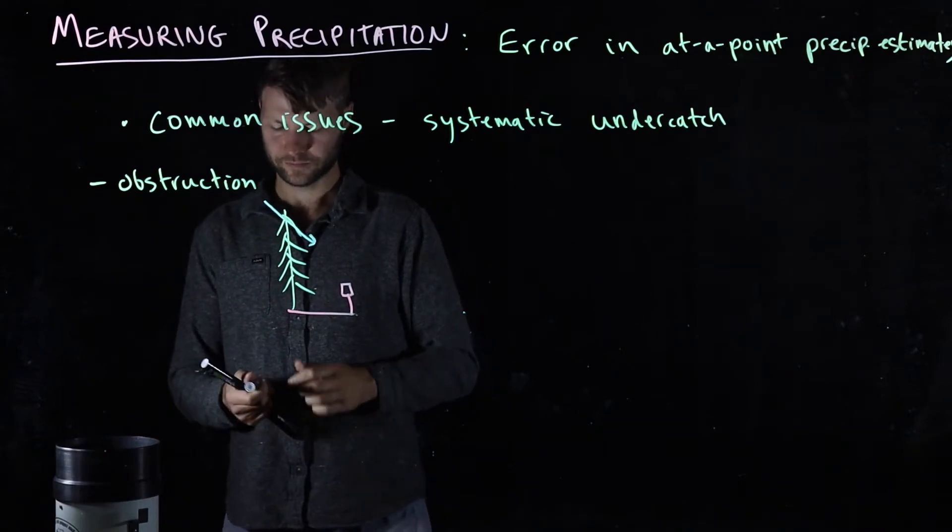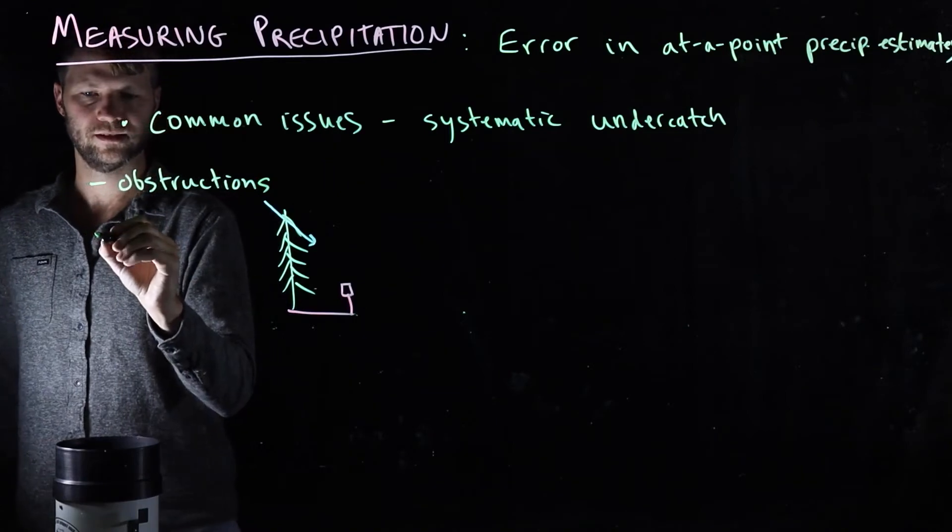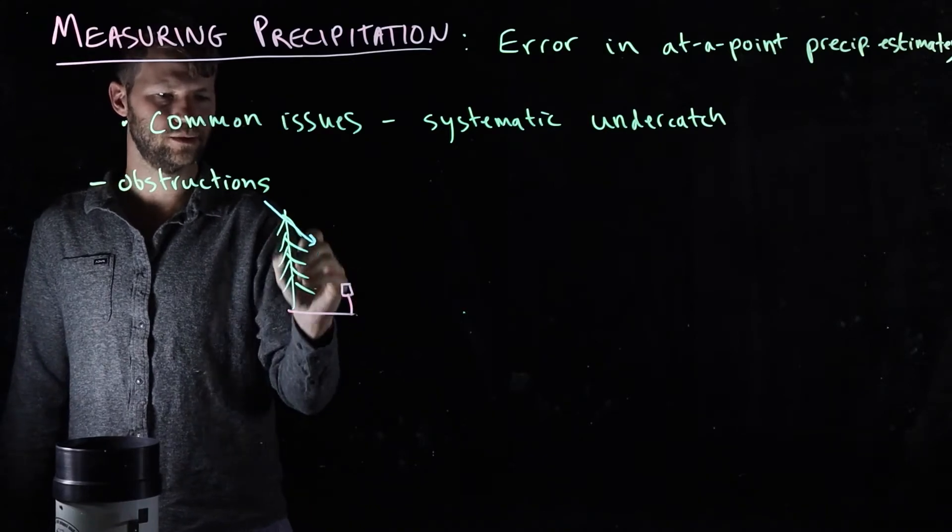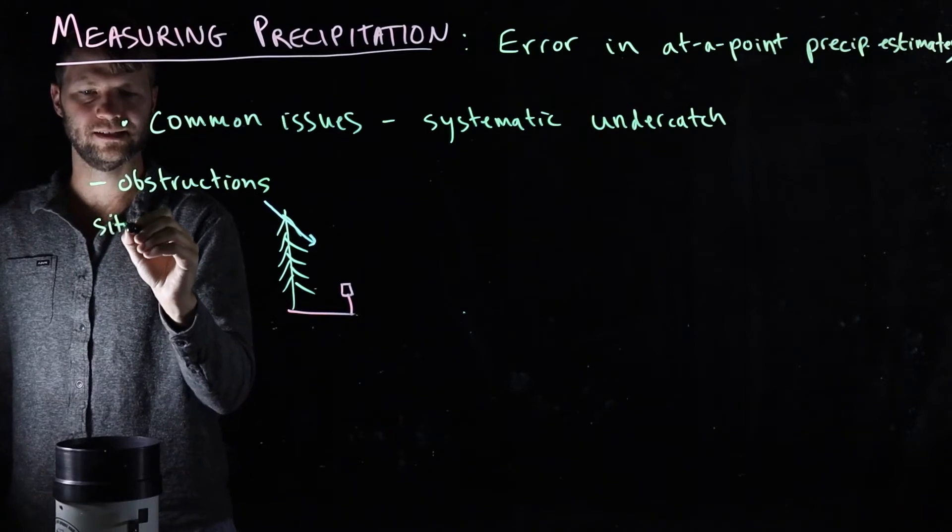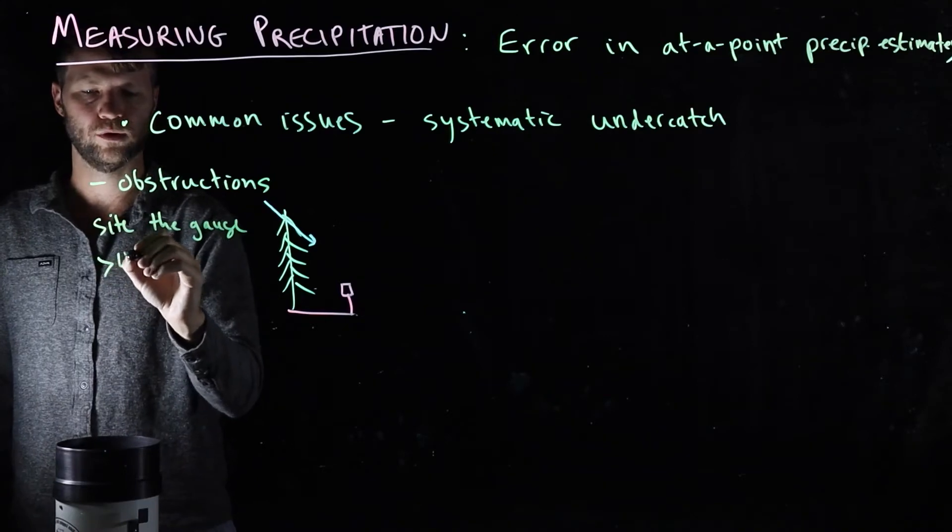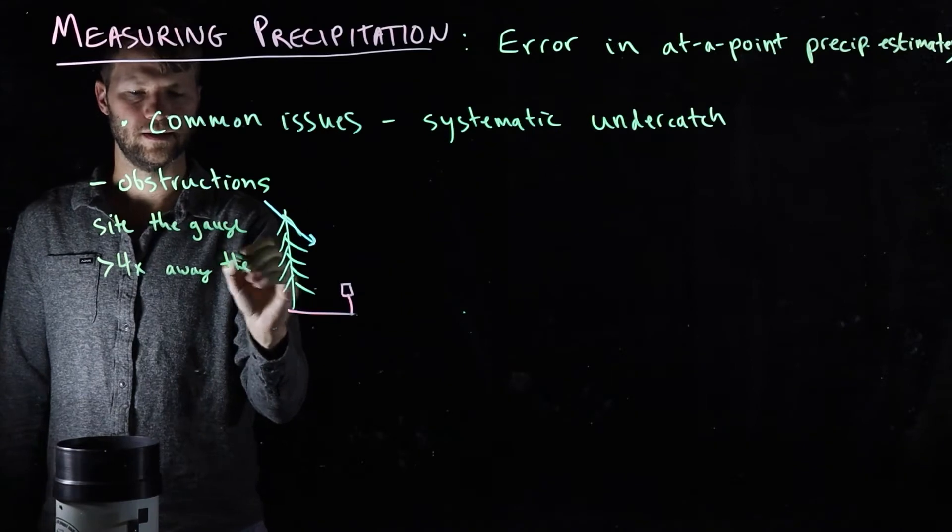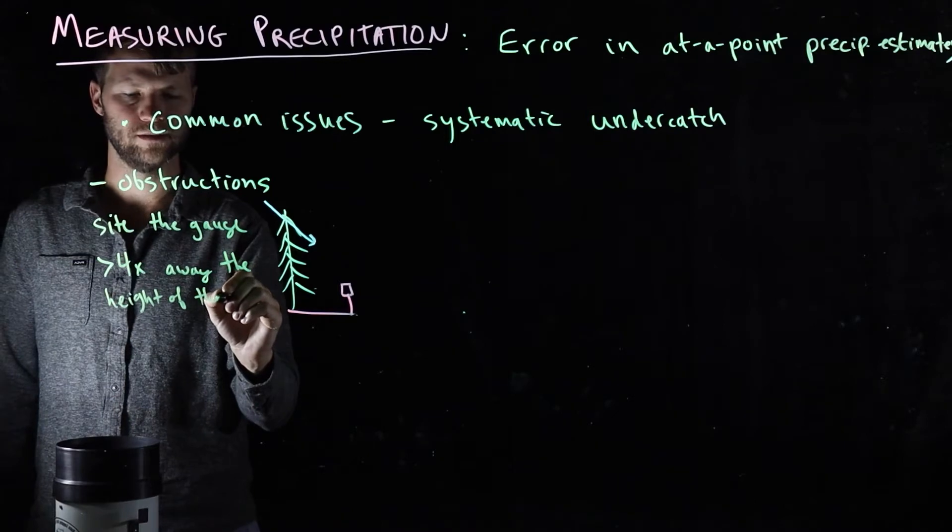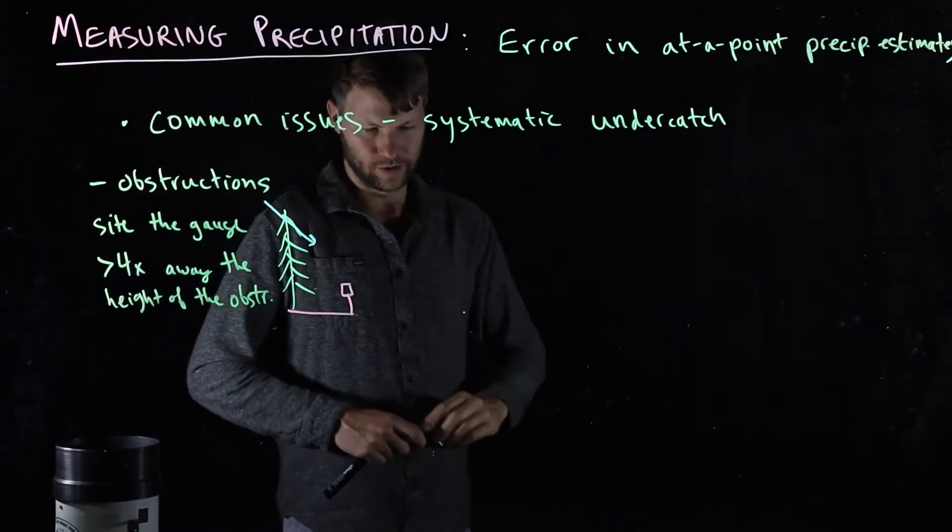In general, we would like our obstructions to be at least four times the height of the nearest—our gauge to be four times away horizontally the height of the nearest obstruction. So we would like to site the gauge at least 4x away the height of the obstruction in order to avoid this issue.